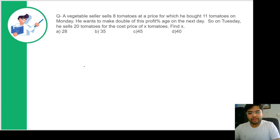First let's solve this with the basic approach. Assume the cost price of one tomato is equal to one rupee. The vegetable seller sells 8 tomatoes at the price for which he bought 11 tomatoes.